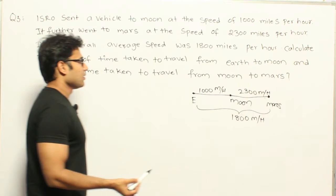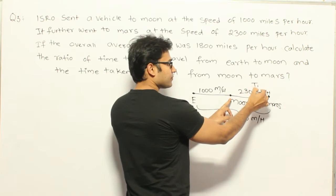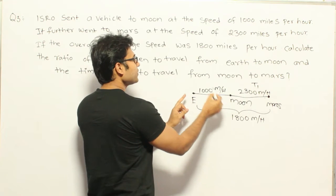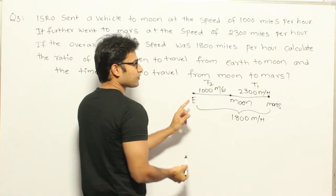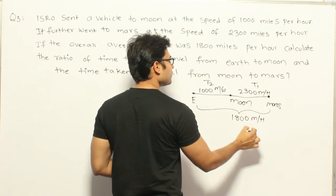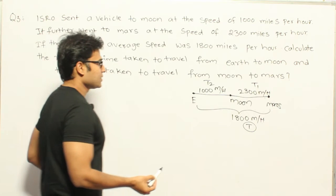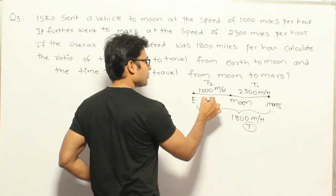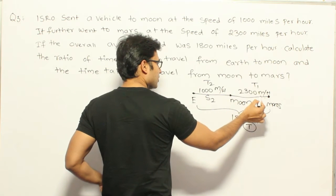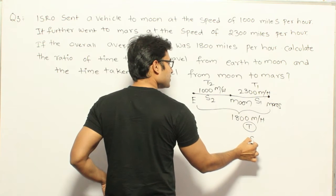Let us assume that the time taken to travel from Moon to Mars is T1, and the time taken to travel from Earth to Moon is T2. The overall time is T. The speed from Earth to Moon is S2, the speed from Moon to Mars is S1, and the overall speed is S.